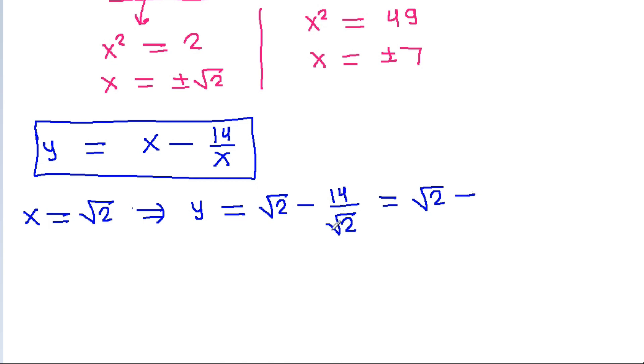When x equals square root of 2, then 14 divided by square root of 2 is 7 times square root of 2, so y equals square root of 2 minus 7 square root of 2, which is minus 6 times square root of 2.